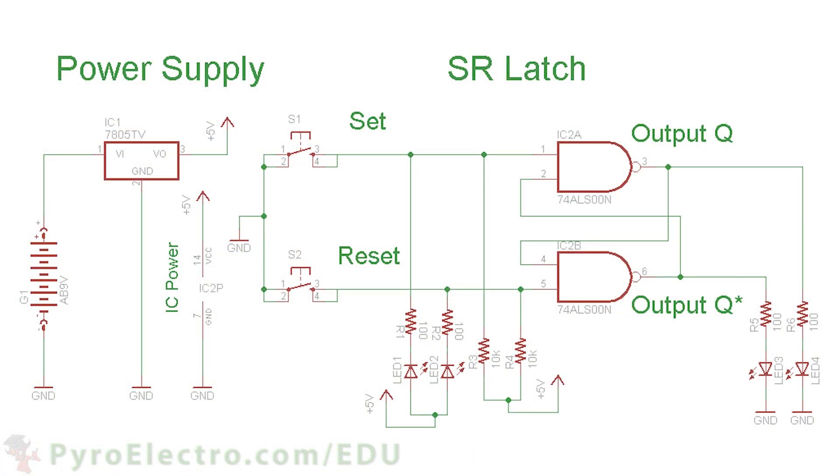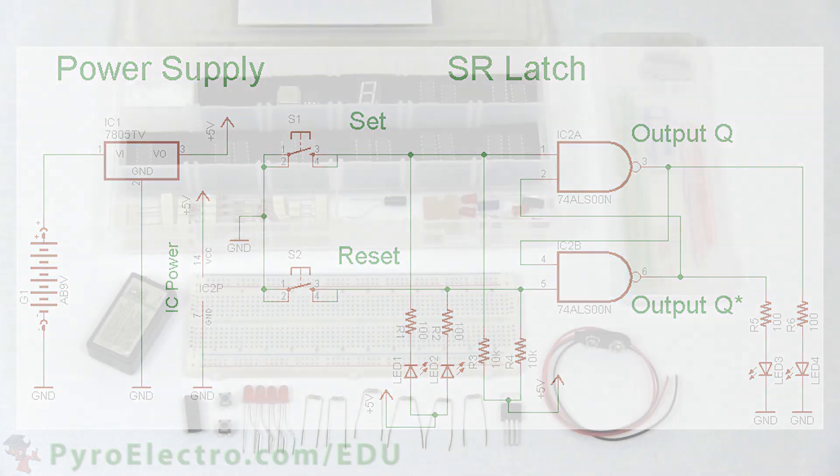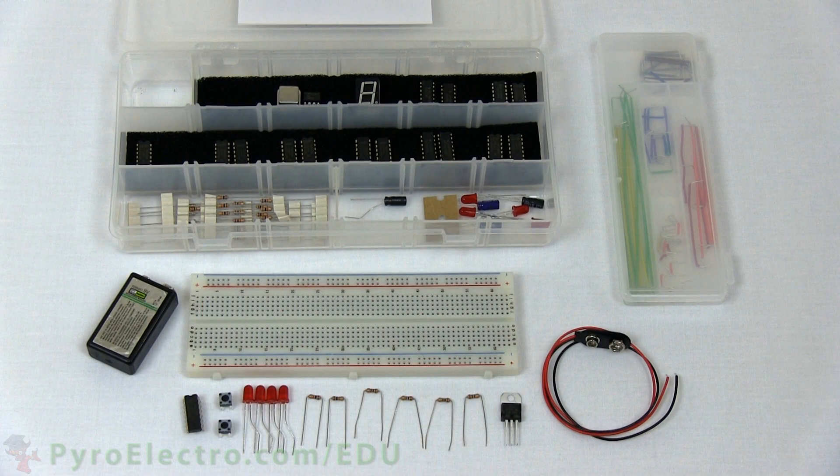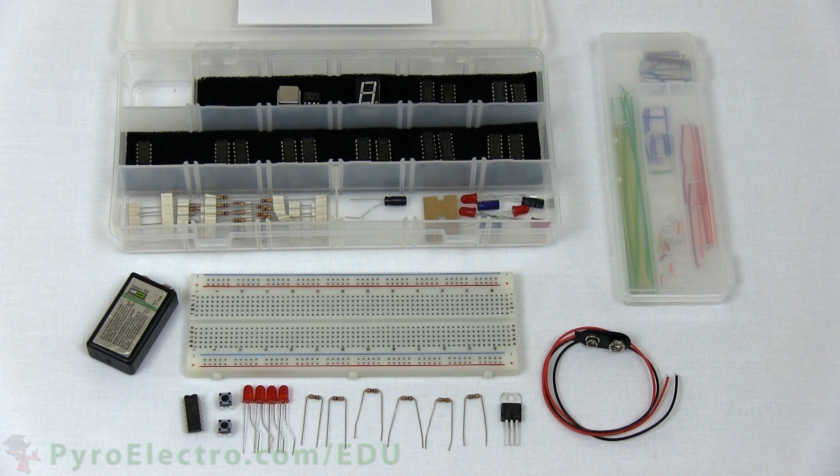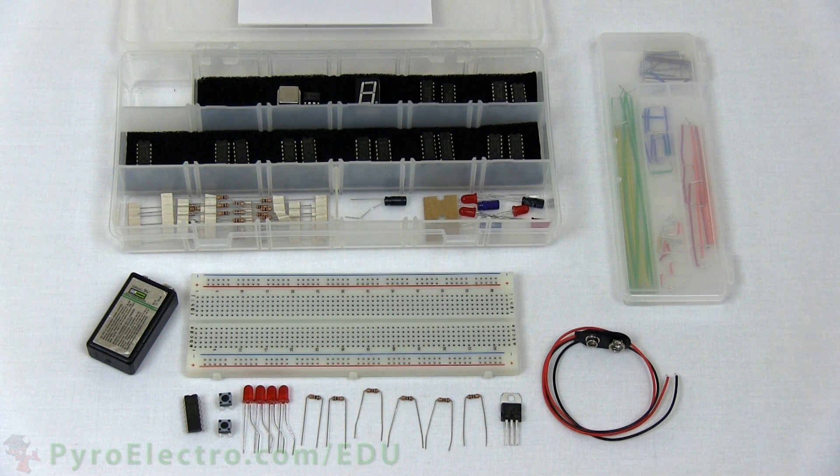Since we've verified that the NOR gate SR latch works as expected, let's go ahead and do the same for the NAND gate version. For reference, here is the schematic for the NAND gate style of SR latch that we looked at before. To build this circuit, we will use all the same parts, but this time we will use a 74HC00 NAND gate IC.